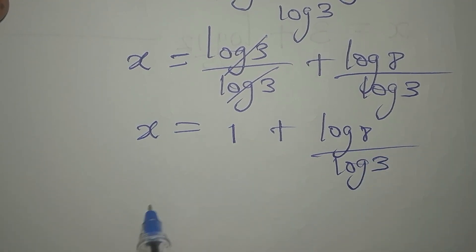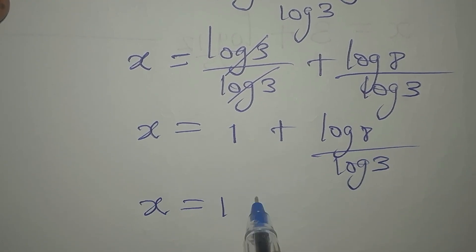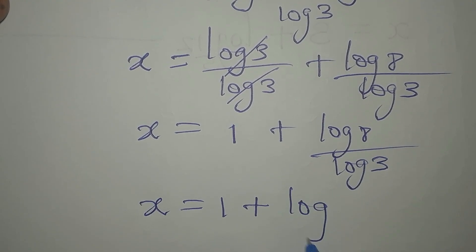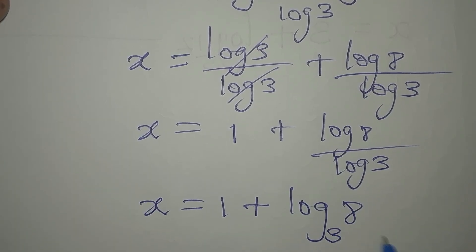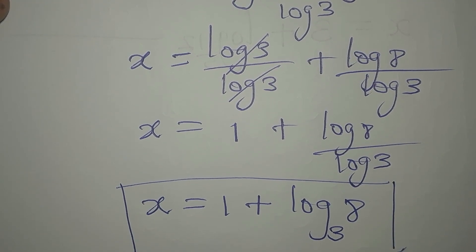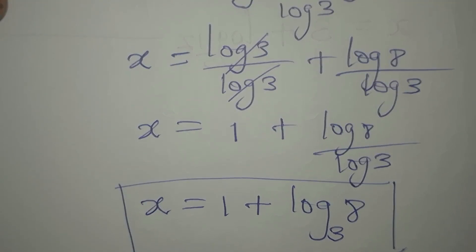Now the next thing that we're going to do is to change the base here, so that x will be 1 plus log 8 to the base of 3. This 3 here becomes the base. This is the value of x, but you can decide to write this in decimal form. Now let's go into the verification stage.